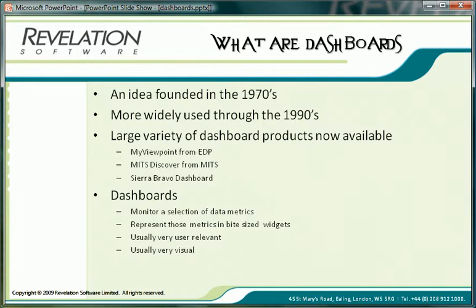Dashboards are now frequently used to provide this snapshot of information to users right on the desktop. This information is provided through the use of small but very visual tables and charts with drill-down capability in some of the premium solutions. In addition, gauges, traffic lights, and the like are frequently used to give visual warnings of limits being reached.